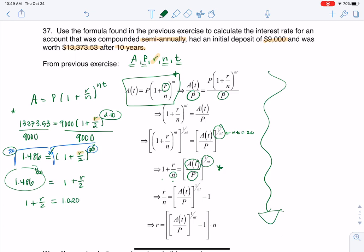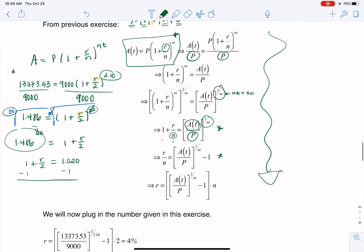So the next thing I want to do now is I want to subtract 1 from both sides. And again, that's what you see me doing over here. So let me scooch this up a bit. I'm looking at R over 2 equaling, in this case, 0.020.